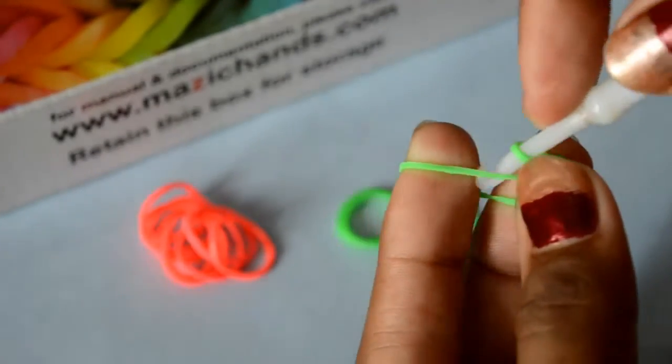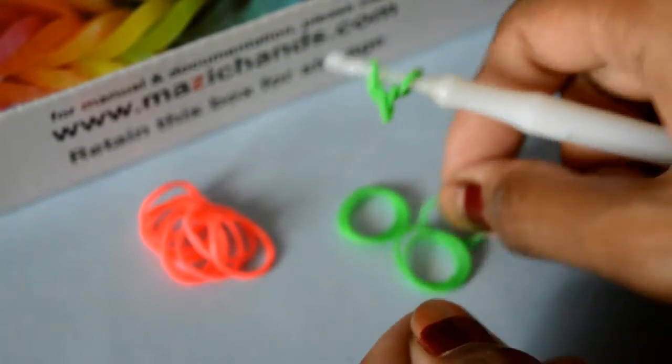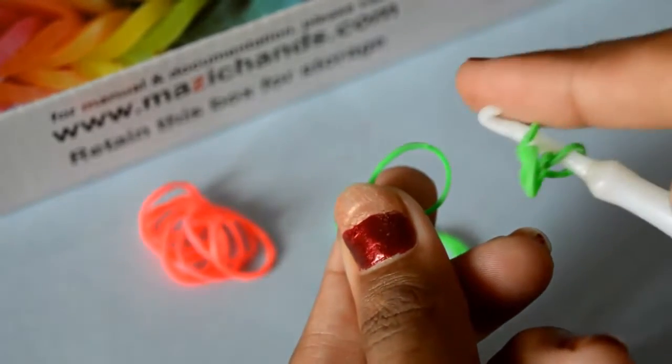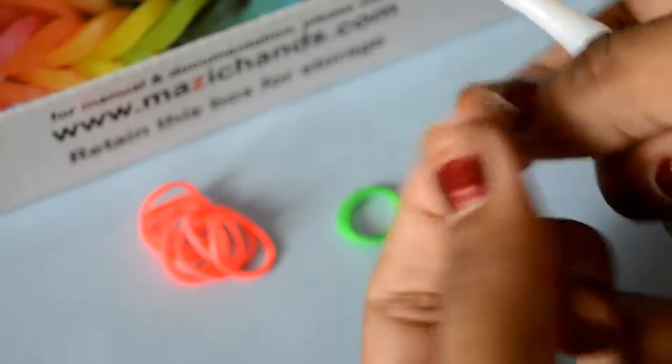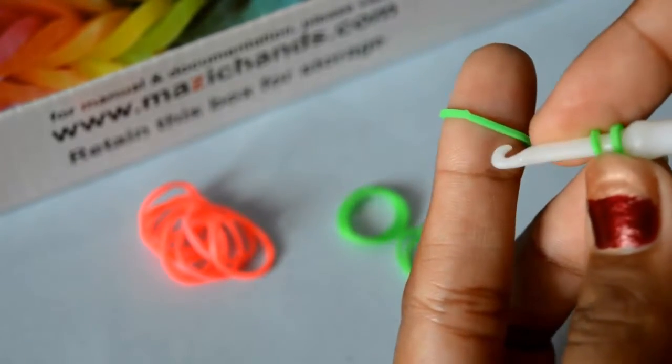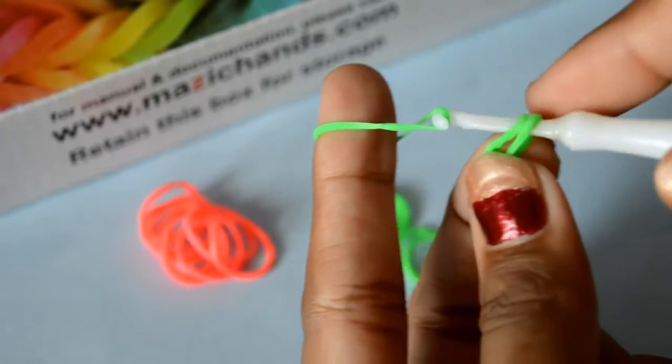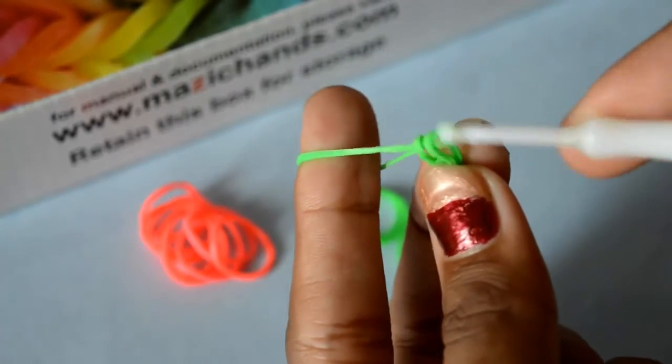Now put this in your hook. Take one more rubber band of same color. Again, put this on your finger and hook it to this rubber band from inside this last rubber band.